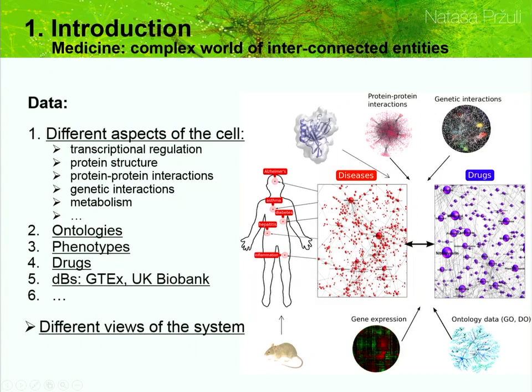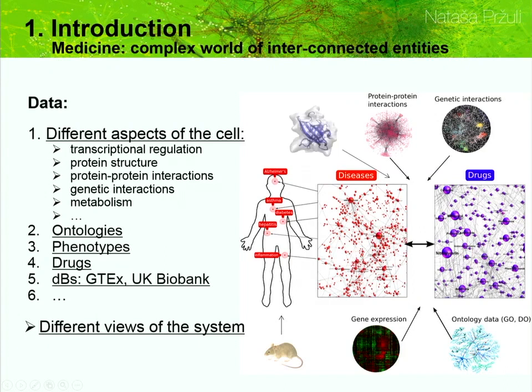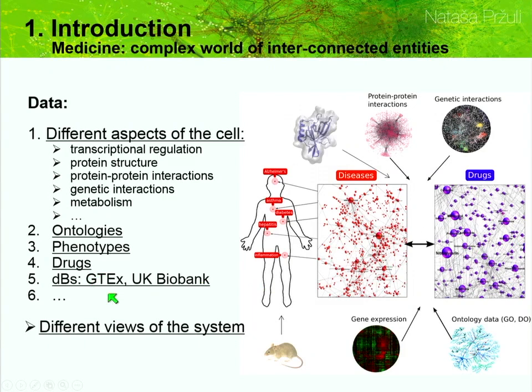Each of these — whether it's transcriptional regulation or protein structure or protein-protein interactions, genetic interactions, epistatic interactions, metabolic reactions — all of them are just different views of the system. This is why we have to extract as much information as possible from each of them individually, but then in the end we must fuse them all together to get a full picture. These data are deposited in many databases, including patient health records, and there are various ontologies that try to organize our biomedical data.